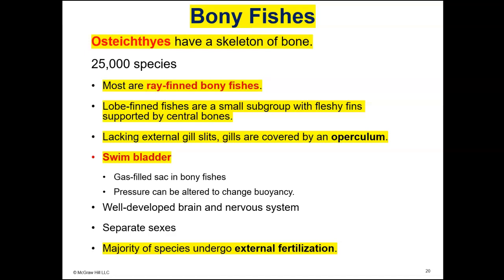Then we have the bony fishes, or Osteichthyes — 'osteo' means bone, 'ichthyes' means fish. The bony fishes are divided into the ray-finned and the lobe-finned, but most of them are ray-finned fishes. They have an operculum, which covers their gills, unlike the sharks, rays, and skates.